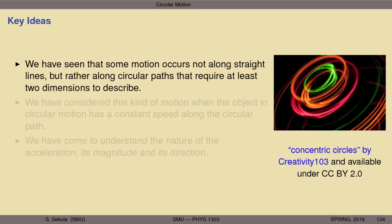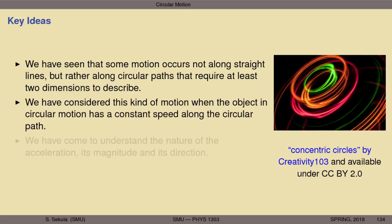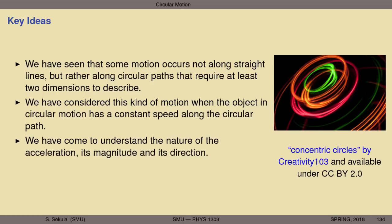Let's review the key ideas from this section. We've seen that some motion occurs not along straight lines but along circular paths requiring at least two dimensions to describe. We focused on the case where the object has constant speed along the circular path — uniform circular motion. We came to understand that the acceleration is center-seeking: it doesn't change the magnitude of velocity but constantly alters its direction. Using the tools of vectors, calculus, space, time, and velocity, we derived the mathematical description of this centripetal acceleration.